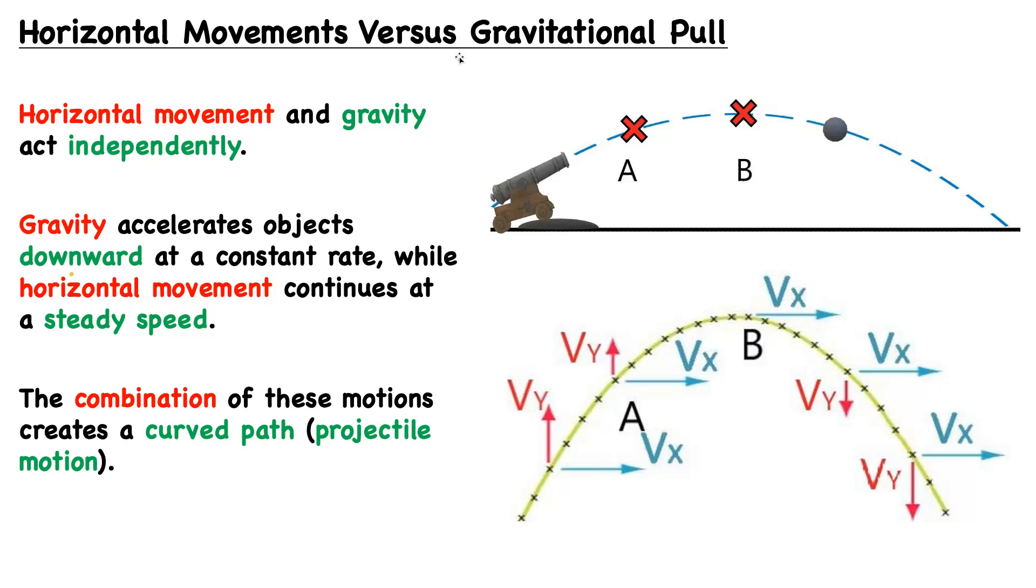Gravity accelerates objects downward at a constant rate, while horizontal movement continues at a steady speed. This means the gravity will not accelerate or decelerate horizontal movement. It's only affecting movement in the y direction, so up and down.